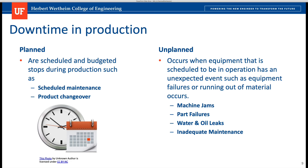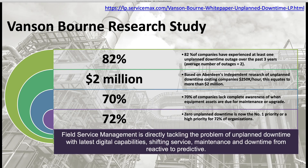Unplanned events occur when equipment scheduled to be in operation has an unexpected event — such as equipment failures, running out of material, machine jams, parts failures, water and oil leaks, or inadequate maintenance. We typically plan maintenance to avoid unplanned events, but some maintenance that wasn't performed correctly can also cause the plant to stop.